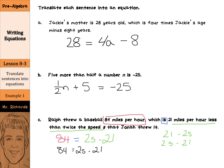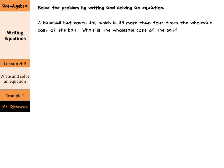He threw the ball 84 miles per hour, which is 21 miles per hour less than twice the speed S. Now we get to solve problems by writing and solving an equation. A baseball bat costs $41, which is $9 more than four times the wholesale cost of the bat. What is the wholesale cost of the bat? We need to write and solve an equation.